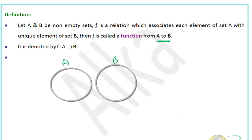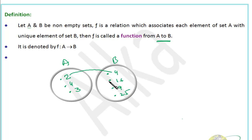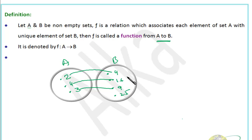Let me take a few examples. Suppose set A = {2, 4, 3} and set B = {4, 16, 9, 25}. The function is f(x) = x². Then 2 maps to 4, 4 maps to 16, and 3 maps to 9. Every element of set A has an image in set B. Also, no element should have more than one image — those are the two conditions for a function.